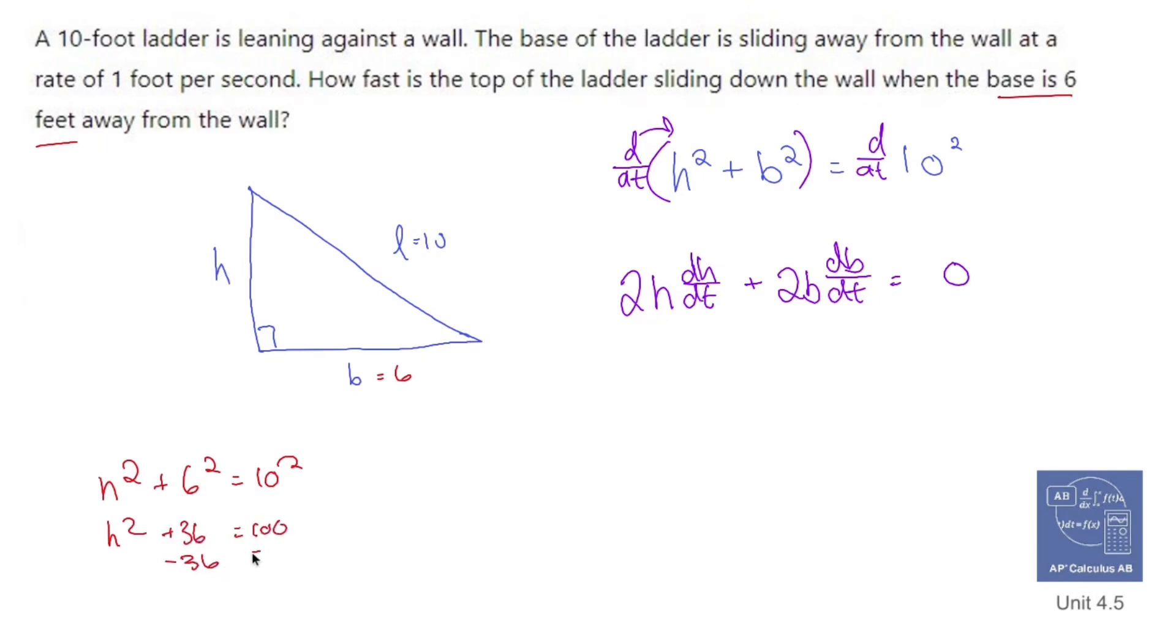Find out that that's going to be 36 equals 100. Subtract 36. Subtract 36. H squared is going to equal 64. Square root everything. And now we're not going to include a plus or minus and find out that H is 8. I could have also used the fact that this is a 3, 4, 5 right triangle doubled, but nah.